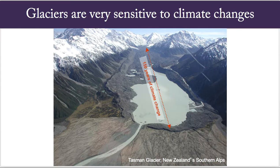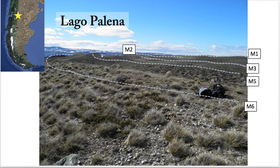We're all familiar with photos like these showing how glaciers have changed since the Industrial Revolution. This shows a glacial moraine deposited around 150 years ago. Glaciers are very sensitive to climate changes, so we can use records of past glacier change to infer past climate change. Glaciers also deposit moraines when they advance.